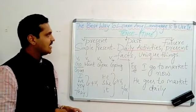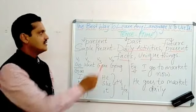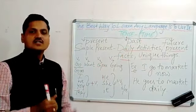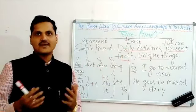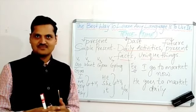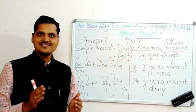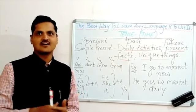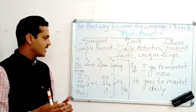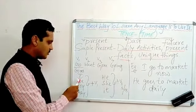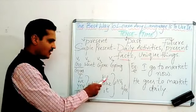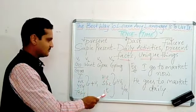Tense is used to denote time. Generally, we communicate with persons, and persons are called subjects. We have first person, second person, and third person. These persons are categorized as: I, we, you, they, he, she, it.